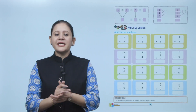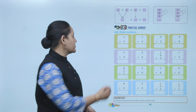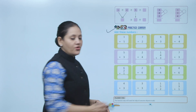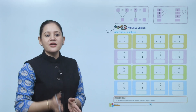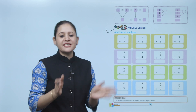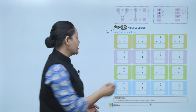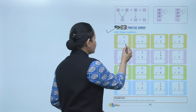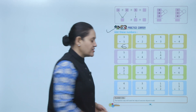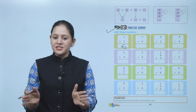Next practice corner — add these numbers. One plus five: one plus five is the same as five plus one, so the answer is six. You have to practice all the sums.